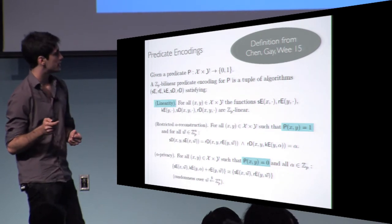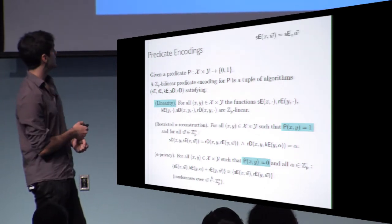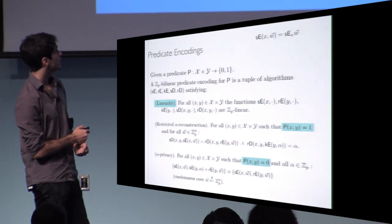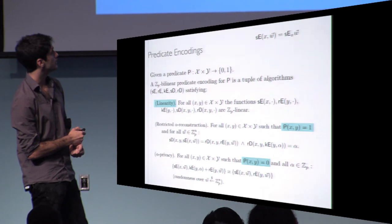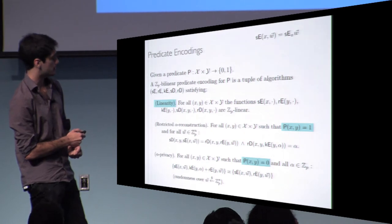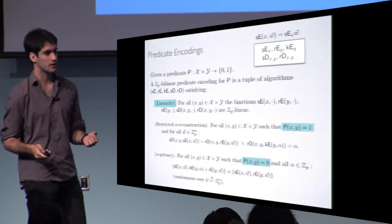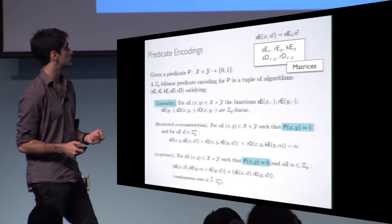I will now redefine predicate encodings. The first modification is to use matrix notation: since all algorithms are linear, you can think of SE(X, W) as the product of a matrix SE(X) times a vector W. So I will talk about five matrices instead of five algorithms.